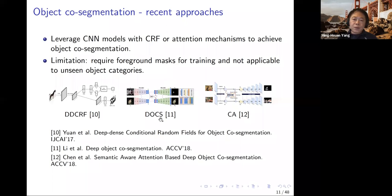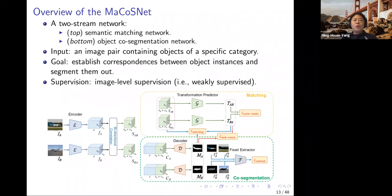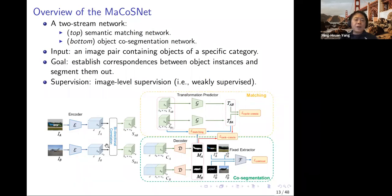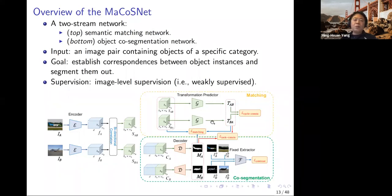In this work, we want to solve these two problems at the same time. There are three modules in our proposed method: an encoder, a transformation predictor, and a decoder. The encoder is straightforward, and we incorporate transformation layers to estimate and account for shape variation. We then use the information from these two networks to supervise each other — that's the main idea in this work.